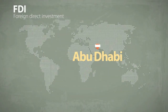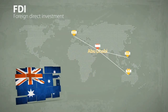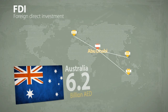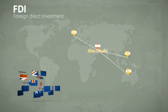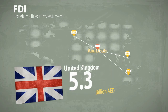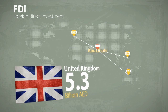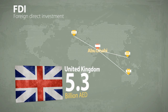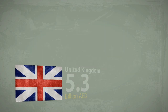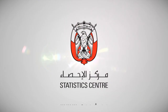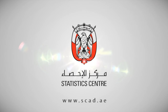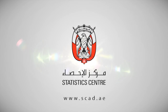FDI from Australia amounted to 6.2 billion dirhams in 2011, followed by 5.3 billion from the United Kingdom. Statistics Centre, Abu Dhabi.